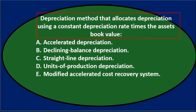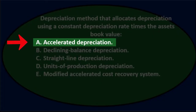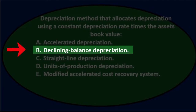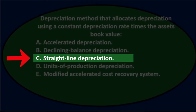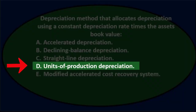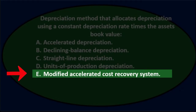Depreciation method that allocates depreciation using a constant depreciation rate times the asset's book value. A. Accelerated depreciation. B. Declining balance depreciation. C. Straight line depreciation. D. Units of production depreciation. Or E. Modified accelerated cost recovery system.